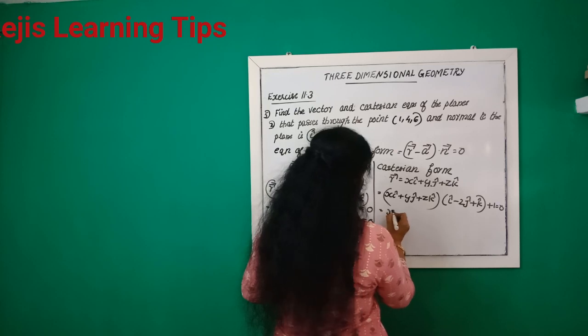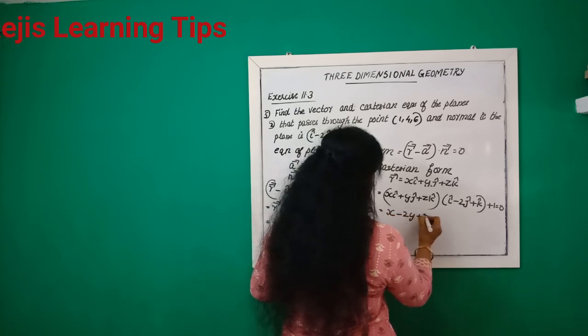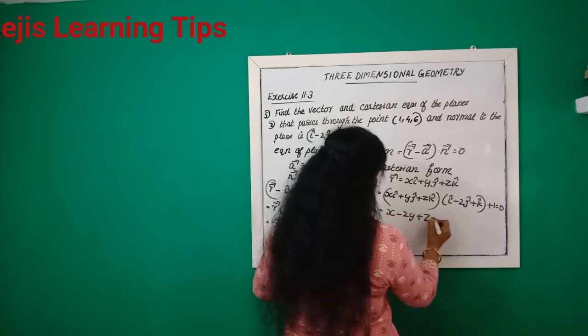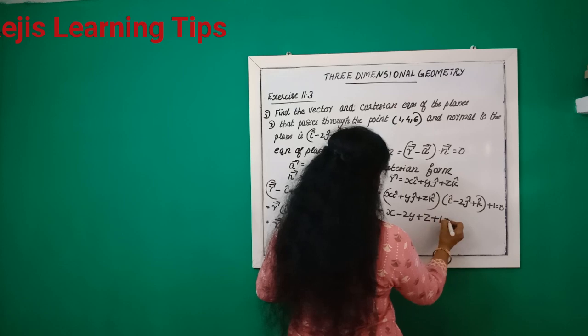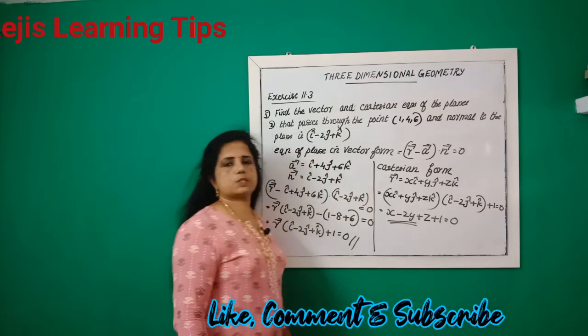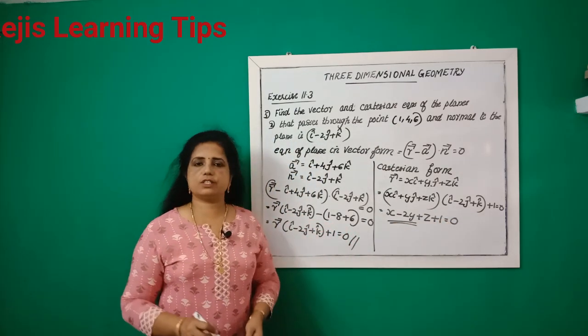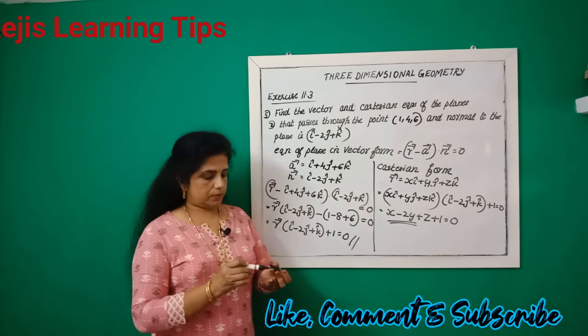That gives x minus 2y plus z plus 1 is equal to zero. This is the Cartesian equation of the plane for the second sub-problem.